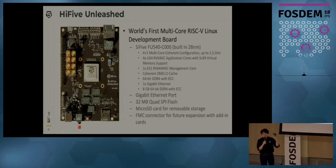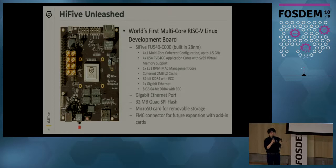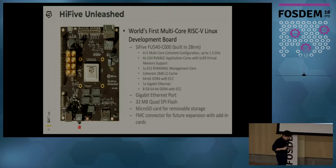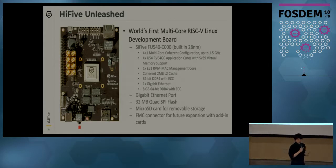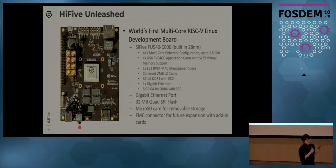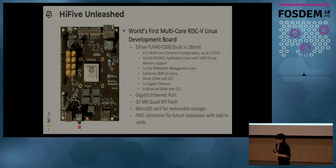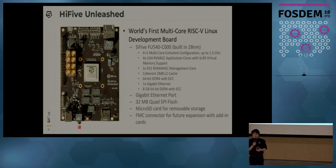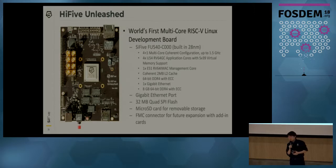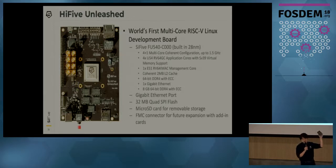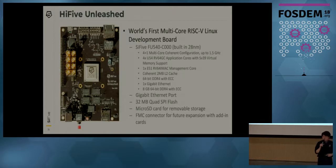This is the HiFive Unleashed — the world's first multi-core 64-bit Linux development board. It came out of the fab two days ago, so you are the first audience to actually see it. In the middle you can see the SiFive Freedom Unleashed 540 chip — the first stepping, built in 28 nanometers. It has four 64-bit application cores implementing the RV64GC ISA, one 64-bit management core implementing RV64IMAC, a coherent 2 MB L2 cache, and the board supports 8 GB DDR4 with ECC.